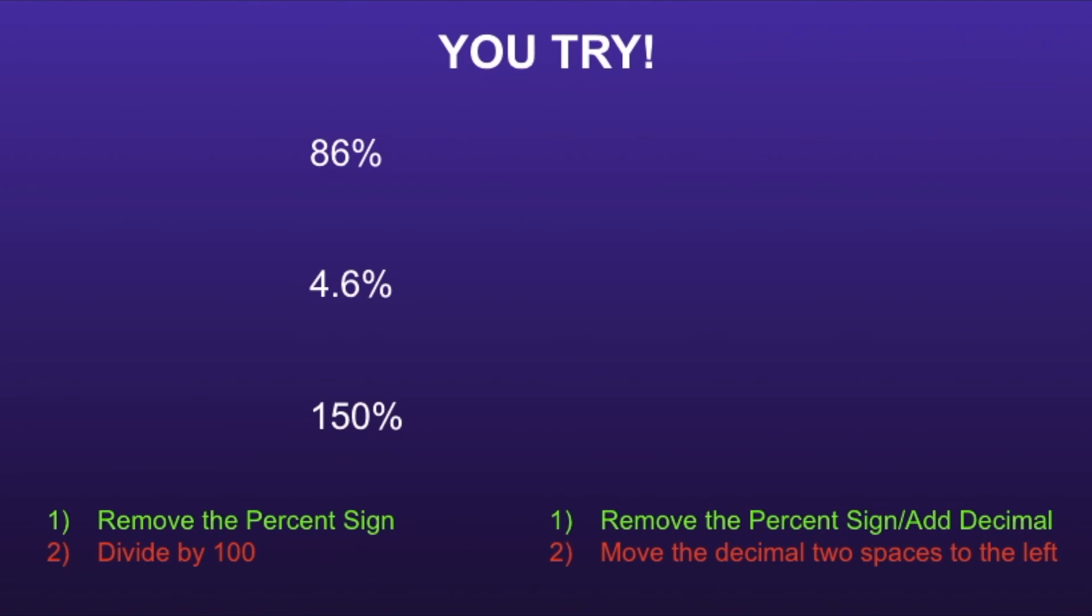I am going to use method number 1 to convert these percents to decimals. Step 1 is to remove the percent sign. Step 2 is to divide by 100. And now we have our decimal equivalents. 86% is equal to 0.86, 4.6% is equal to 0.046, and 150% is equal to 1.5.